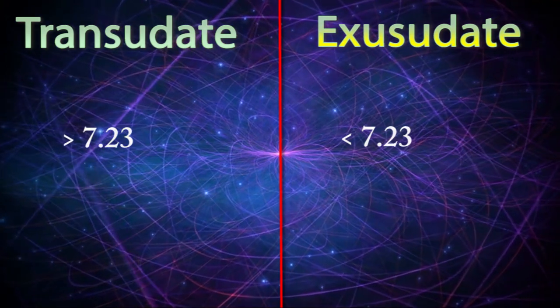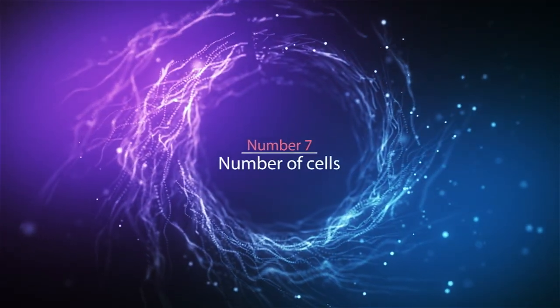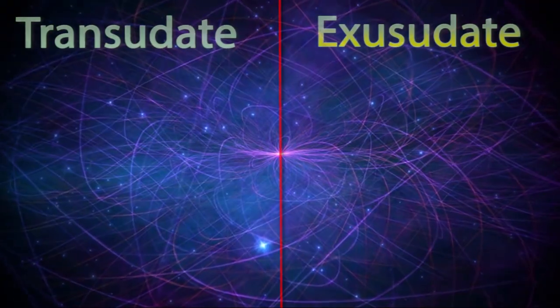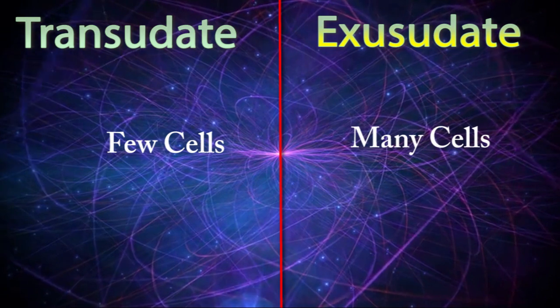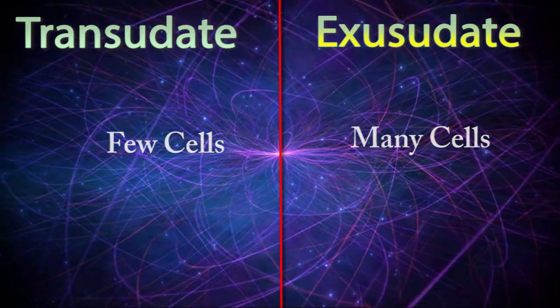Difference number seven: number of cells. Transudate contains very low number of cells, but exudate always presents higher number of cells.